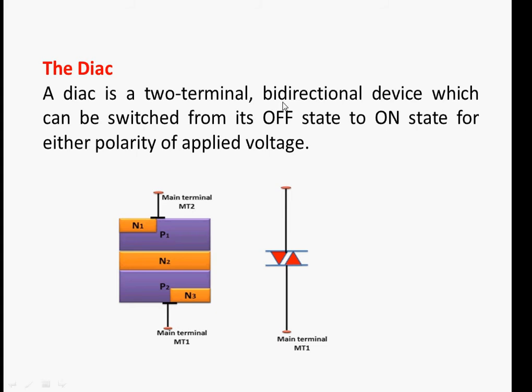No doubt, firstly, the current will be small because if this terminal is positive and this terminal is negative, no doubt slightly P2 is forward biased and slightly N1 is forward biased, but there is a central layer. Because of the central layer which is reverse biasing, at the start, the current will be very small.